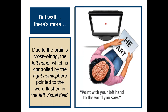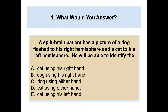Due to the brain's cross-wiring, the left hand, which is controlled by the right hemisphere, pointed to the word flashed in the left visual field. When patients were asked to point with their left hand to the word they saw, they pointed to 'he.' So if a split brain patient has a picture of a dog flashed to his right hemisphere and a cat to his left hemisphere, he will likely be able to identify the cat using his right hand.